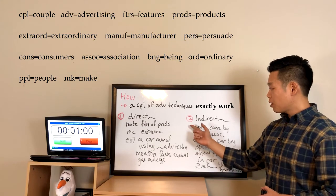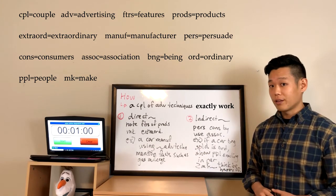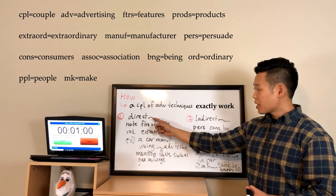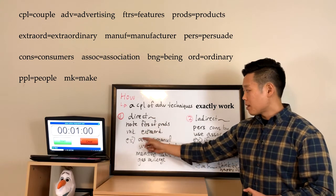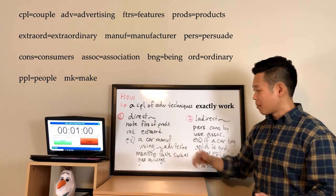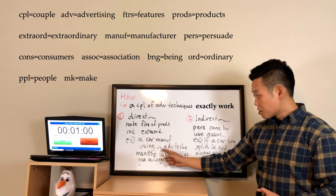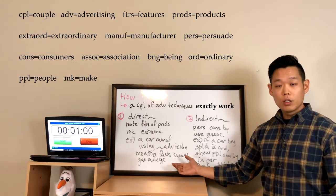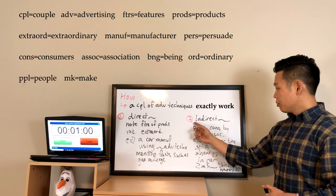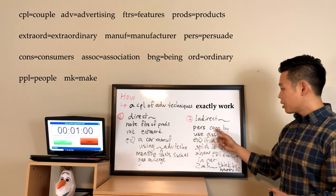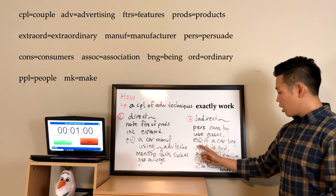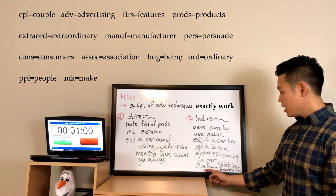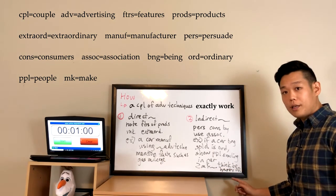The first section is about direct advertising techniques and the second is about indirect advertising techniques, so 'on the other hand' is the better transition here. For direct advertising techniques: they note the features of their products that make them extraordinary. For example, a car manufacturer using this technique will mention facts such as gas mileage to sell their cars. For indirect advertising techniques: they persuade consumers by using association. For instance, if a car being sold is ordinary, the commercial will show people smiling in the car to make potential buyers think they will be happy if they purchase the car.